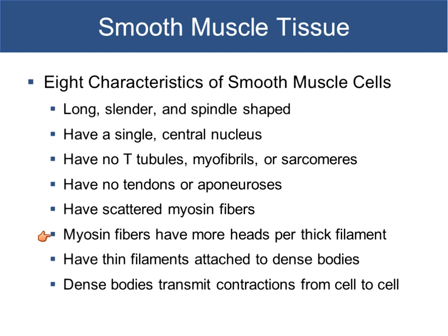The myosin fibers are scattered throughout smooth muscle and have lots of heads on them — because the actin filaments are attached to dense bodies and are also scattered throughout the muscle cell, we need enough myosin heads to connect to and pull them in. Because of the way myosin and thin filaments are scattered throughout the cell, smooth muscle has more of a rhythmic type of contraction. We call those rhythmic contractions peristalsis. It's because of those dense bodies that the thin filaments are attached to that the contraction is transmitted from one cell to the next, giving us that nice rhythmic wave-like flow.